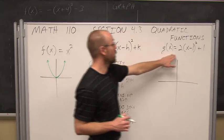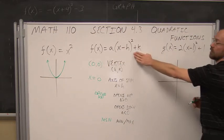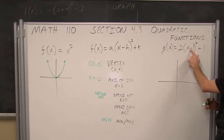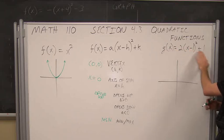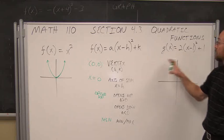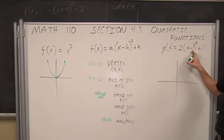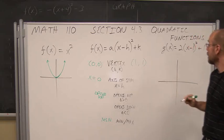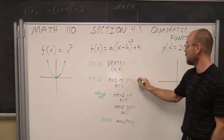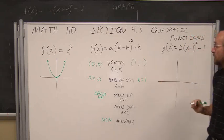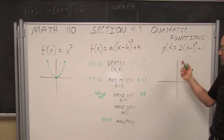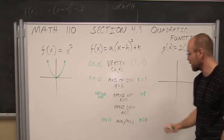Now, what can we determine from a function written in standard form? Well, we can tell a is 2 and it's positive. We know that the h value is always the opposite of what we see inside the parentheses — what does x have to be to get us back to 0? And this is our k value. Let's determine the vertex: our h value is positive 1 and the k value is also positive 1. The axis of symmetry is always x equals h, so in this case it's x equal to 1. Because a is positive, we know it opens up, and because it opens up, we know we're going to find a minimum value.